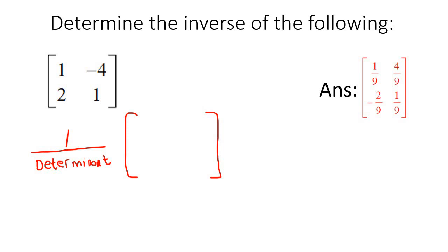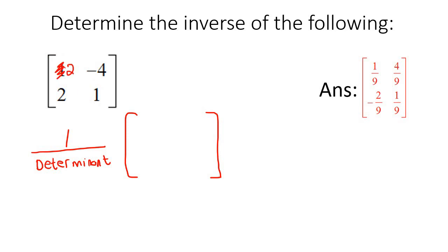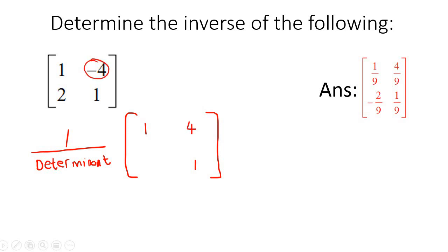The way this new matrix works is: you look at this diagonal and switch the numbers around. So if it was a 2 over here, the 2 would go down here and the 1 would go up there. Then for the other diagonal, you don't switch them around, but you change their sign. So if this is negative 4, then over here you keep it as positive 4. And if this is positive 2, then over here it's negative 2.